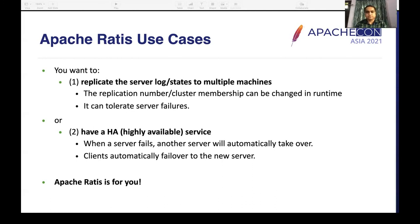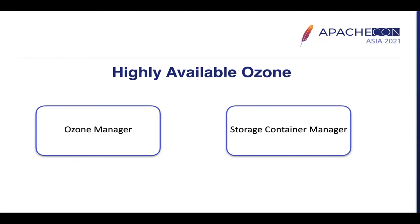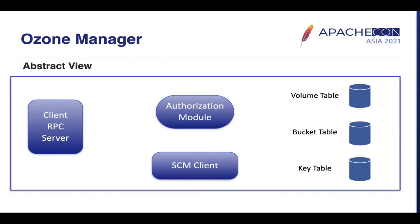Coming to high availability of Ozone — we have two master services which are single points of failure. To make Ozone highly available, we must implement HA for both Ozone Manager and Storage Container Manager. Ozone Manager is the namespace layer of Ozone; it stores information about volumes, buckets, and keys in RocksDB, and also handles access control. To achieve HA, volume, bucket, and key information must be replicated to more than one machine — this is done using RATIS.